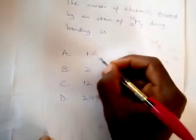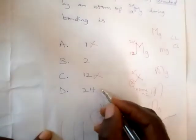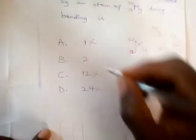It is 2. Not 1, not 12, if you donate all of the 12, nothing left again, and not even 24. So it is 2. So I hope it is clear.